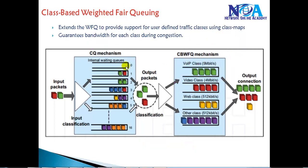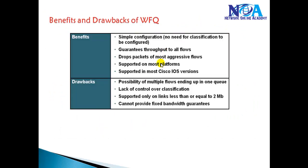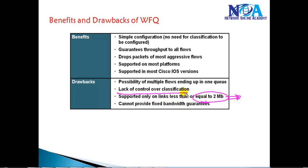We define the classes — what we call user-defined traffic classes — and the default guaranteed bandwidth. Comparing this to the previous weighted fair queuing mechanism: in WFQ there is automatic classification based on precedence-based weighting. WFQ is supported only on links of 2 Mbps or less, and there is a lack of control over classification because nothing is manually configured — it is done automatically.